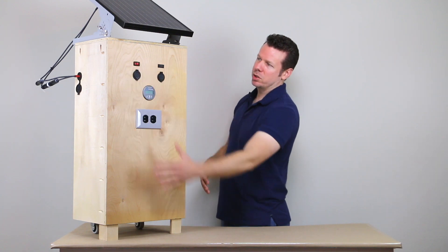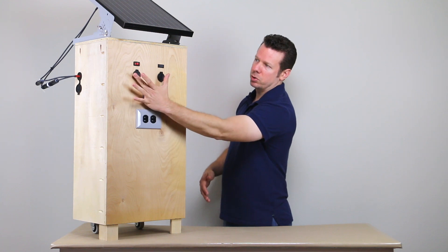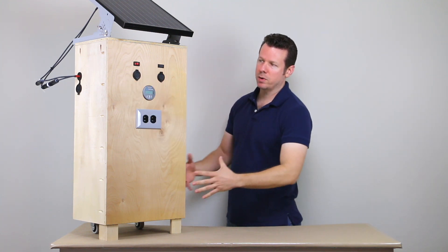But we've got our on-off switches. We've got some USB outlets, a 12-volt socket. So these are both 12 volts running straight off the battery inside.